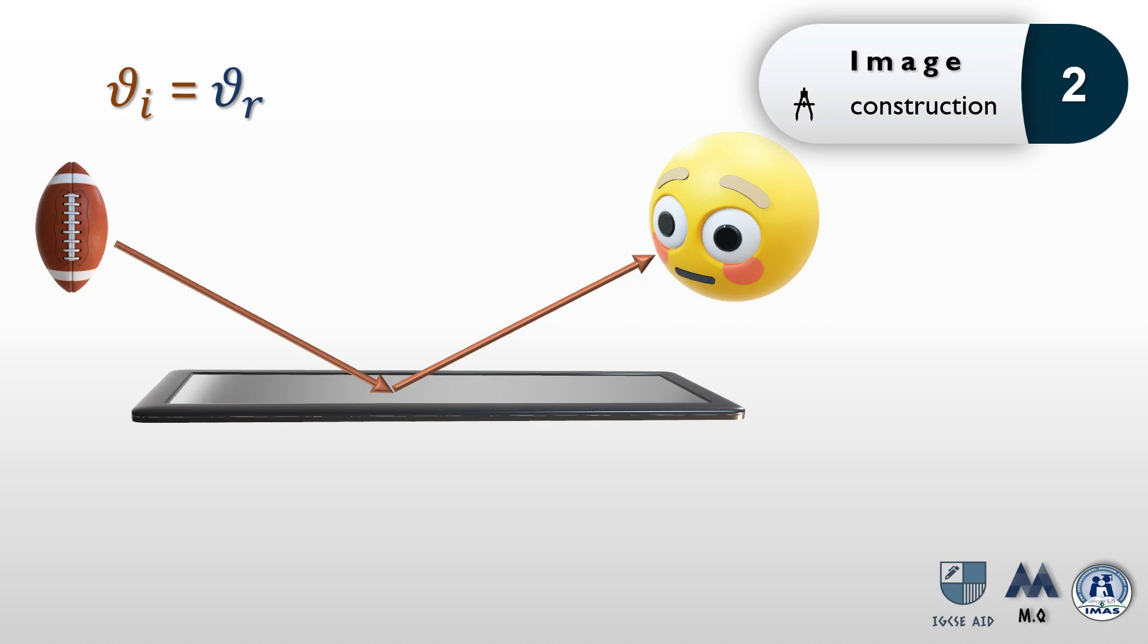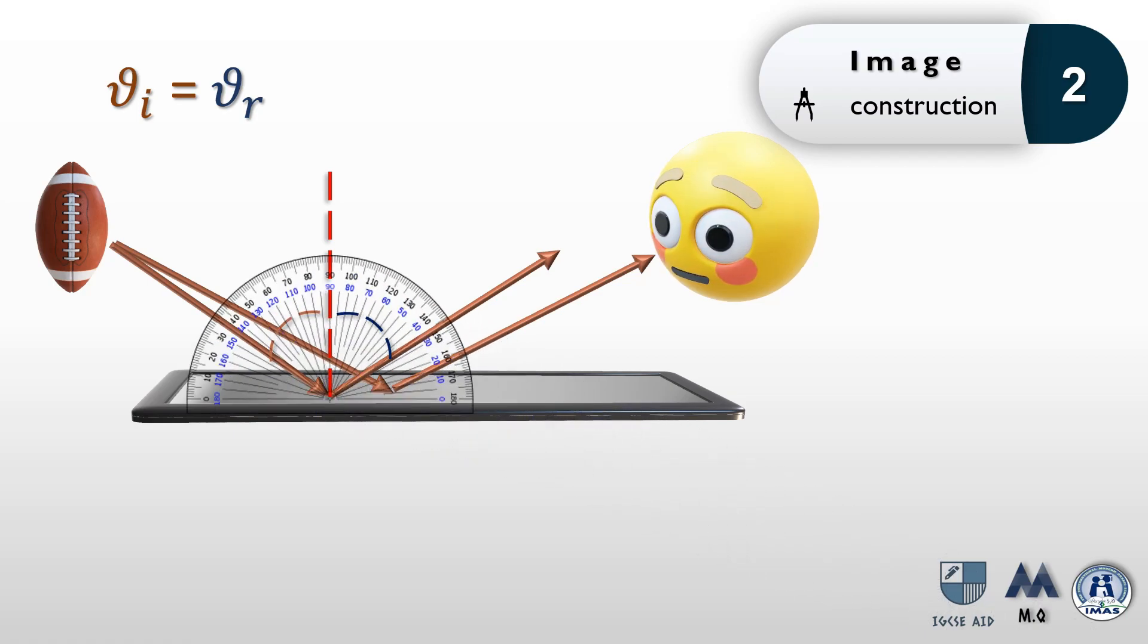We'll do this by having another set of incident and reflected rays. Before going forward, have a look at how to use a protractor to compare the incident and reflected angles. Make sure not to use the numbers on the protractor itself, but keep on counting the degrees from the normal line to the incident ray as demonstrated. Same goes for the reflected angle.